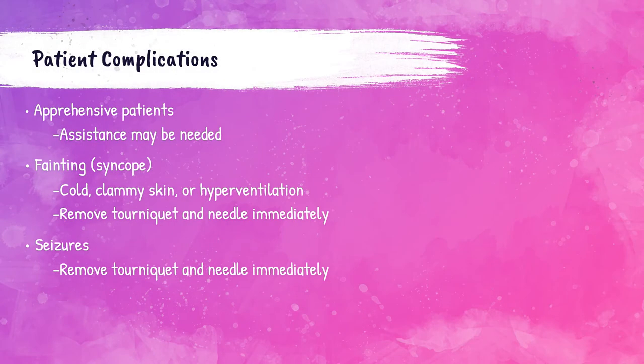If the patient is excessively nervous but consents to the blood collection, the phlebotomist may need to have assistance holding the arm or distracting the patient during the procedure. Patients who are nervous or have previously fainted should be reclined or lying down during the collection procedure to prevent them from fainting. Fainting is also known as syncope and can happen during phlebotomy procedures.